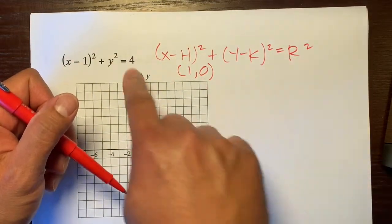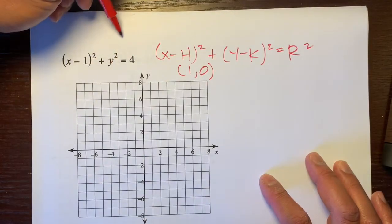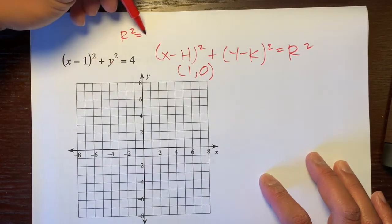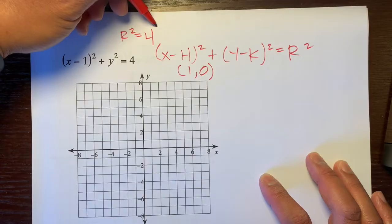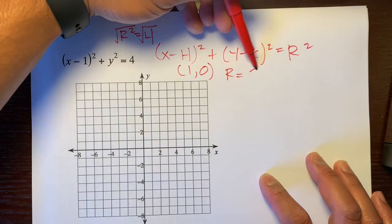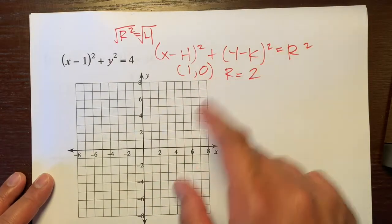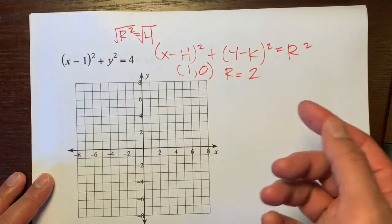And to get our radius, this 4 represents R squared. So we'll just set R squared is equal to 4. And we'll square root both sides. And so R is equal to 2. Here's our center. Here's our radius equals 2. So let's just plot it.